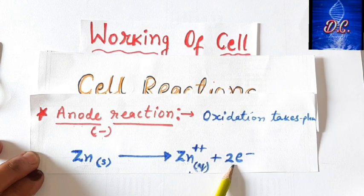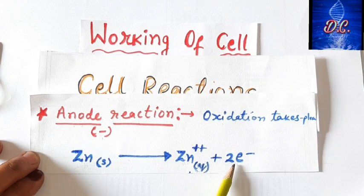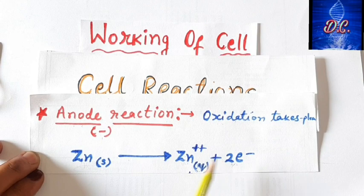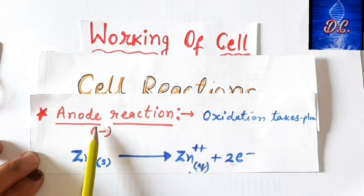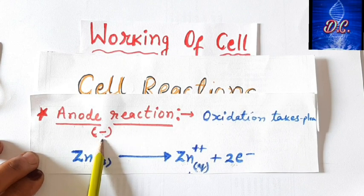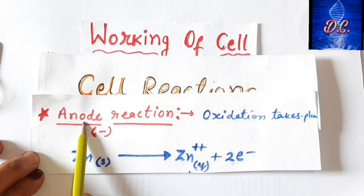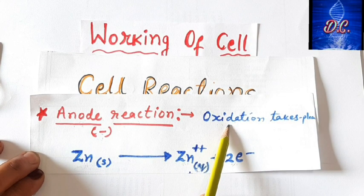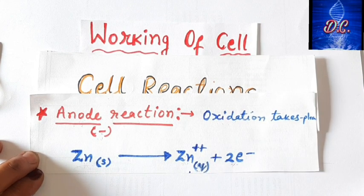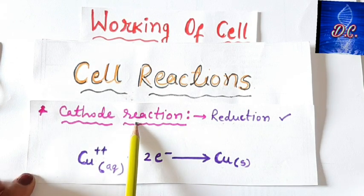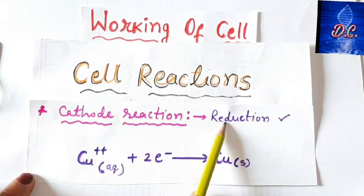These two electrons released during oxidation get deposited on the rod, so our zinc rod becomes negatively charged — that is why the anode is shown as negatively charged. Remember: the electrode on which oxidation occurs is called the anode. At the cathode, since oxidation is happening at the anode, reduction will occur at the cathode.